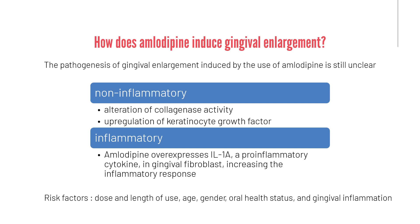The pathogenesis of gingival enlargement induced by amlodipine is still unclear, but two pathways have been suggested. The first is the non-inflammatory pathway, in which decreased uptake of folic acid, blockage of aldosterone synthesis, and feedback increase in adrenocorticotropic hormone level cause alteration in collagenase activity and upregulation of keratinocyte growth factor. Amlodipine also overexpresses interleukin-1-alpha and other pro-inflammatory cytokines in gingival fibroblasts, increasing the inflammatory process.